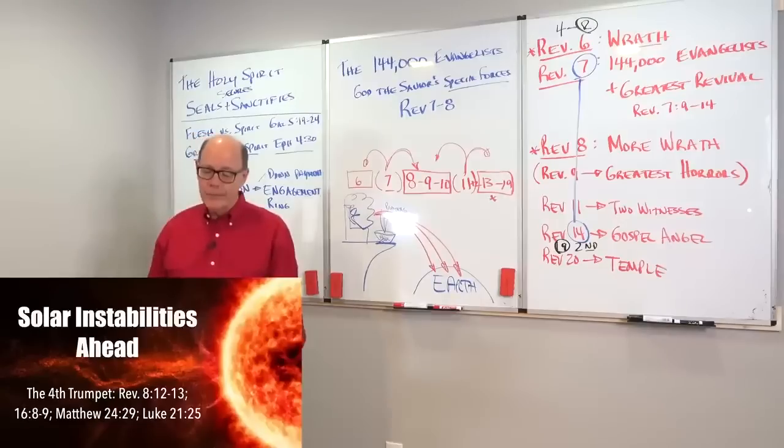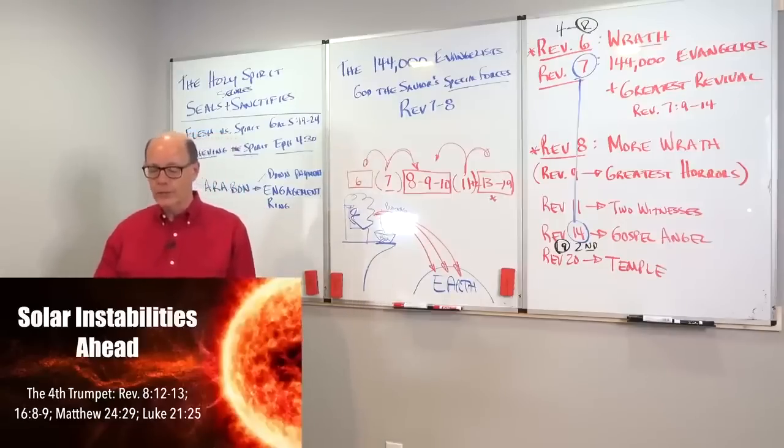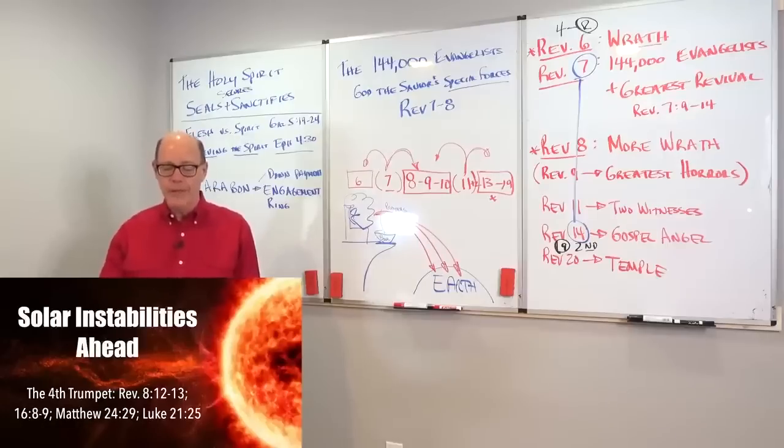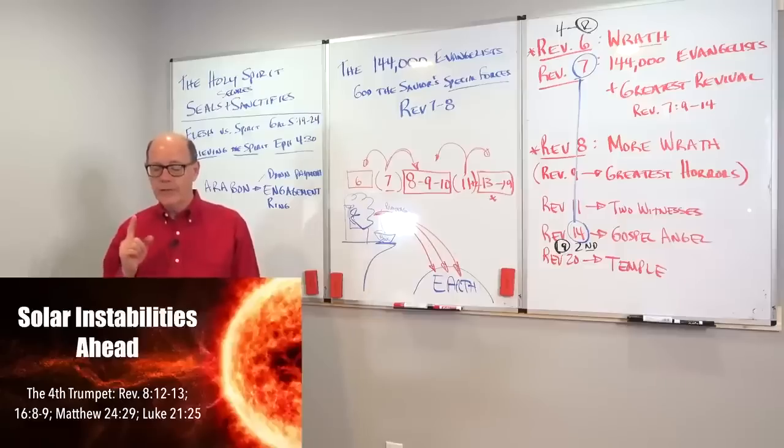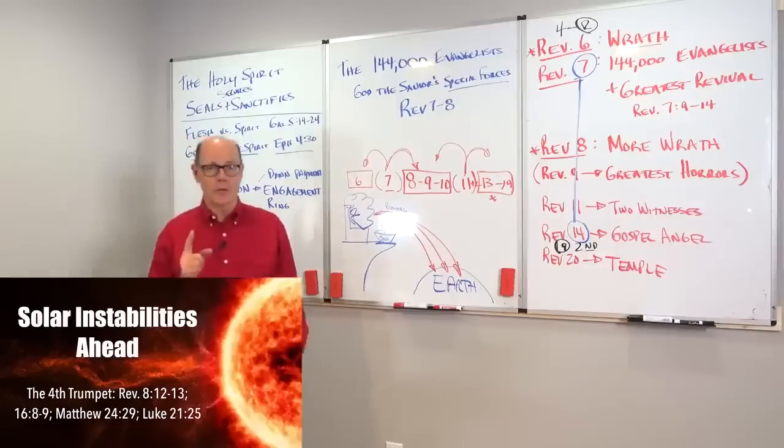On May 15th, we had the highest magnitude G5 solar storm. It's kind of like an F5 tornado. And God says that's coming so much that Revelation 16, 8 and 9 says that the sun is going to scorch people.